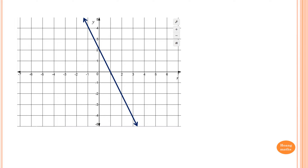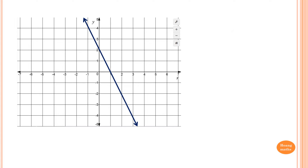Now, this line is going this way. In other words, when x gets larger, y gets smaller — that's why you have a negative gradient. The line is going this way, so m is negative, or m less than 0. The y-intercept is 2 because it cuts the y-axis at 2, so b is 2.